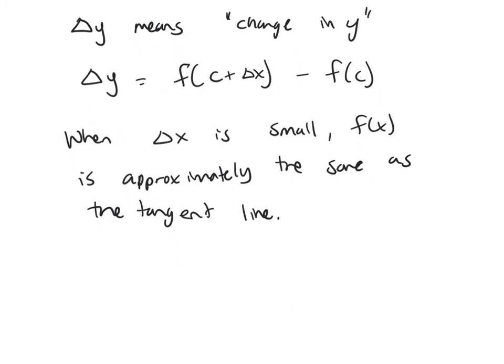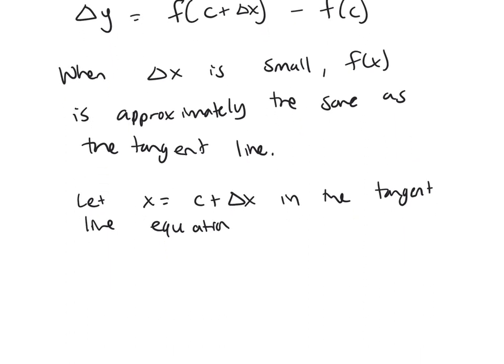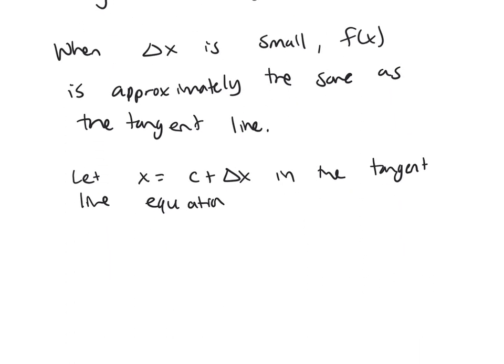So what I'm going to do is I'm going to replace c plus delta x in place of x in the tangent line equation. So remember, our tangent line equation was y equals f prime of c times x minus c plus f of c.